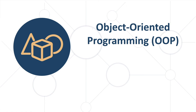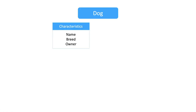Objects are instances of the class definition with certain data characteristics, just like objects in the real world. Another example would be if we have a class named Dog. The class may have characteristics like name, breed, and owner, and actions like bark, eat, sleep, and run.